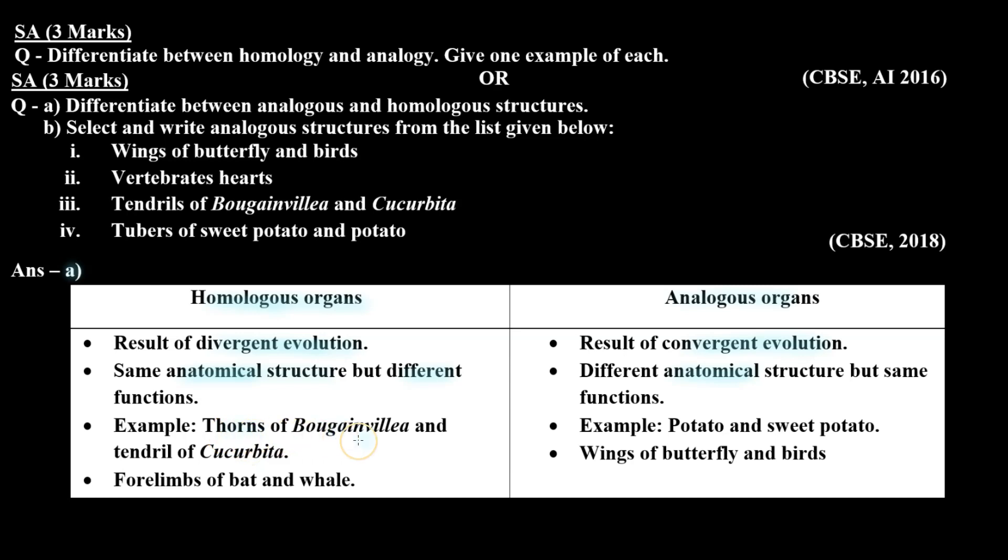Homologous organs example thorns of Bougainvillea and tendril of Cucurbita. Analogous organs example potato and sweet potato. Homologous organs other examples are forelimbs of bat and whale, and analogous organs wings of butterfly and birds.